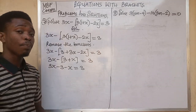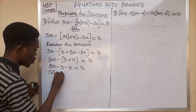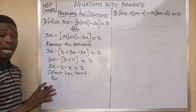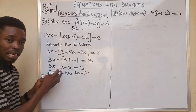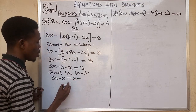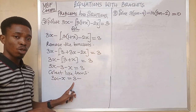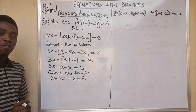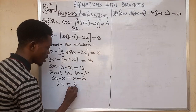The next step is to collect like terms. The variables are already on the left-hand side so we rearrange: 3x minus x gives 2x. Moving minus 3 from the left-hand side to the right-hand side, by rule number 3, negative turns to positive, giving plus 3. So we have 2x equal to 3 plus 3, which gives us 6.